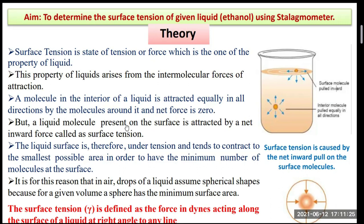The liquid surface is therefore under tension and tends to contract to the smallest possible area in order to have a minimum number of molecules at the surface. For this reason, molecules can form a sphere to minimize surface area. Air drops of liquid assume a spherical shape because for a given volume, a sphere has the minimum surface area.